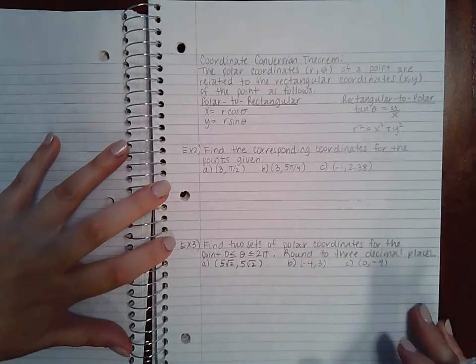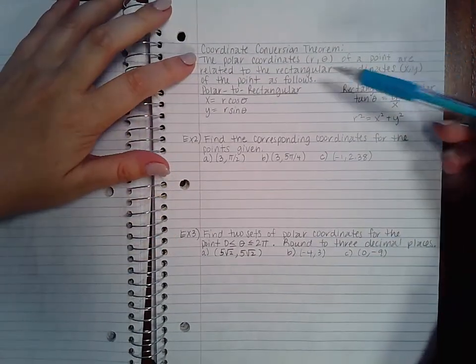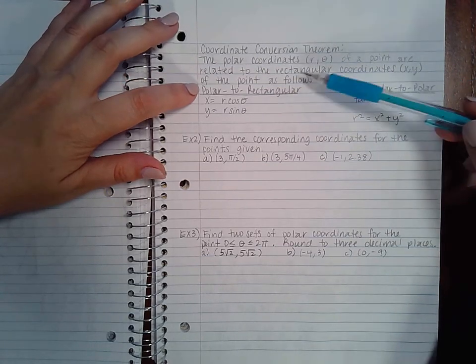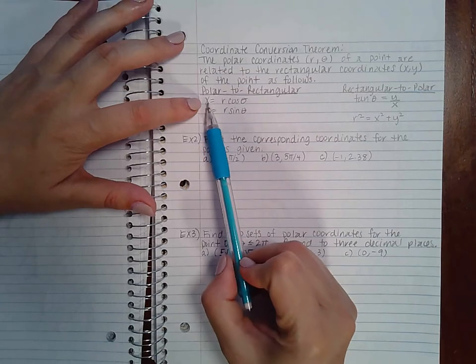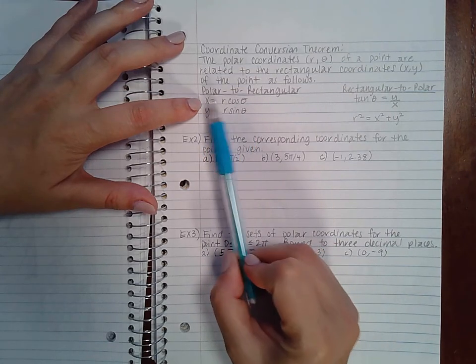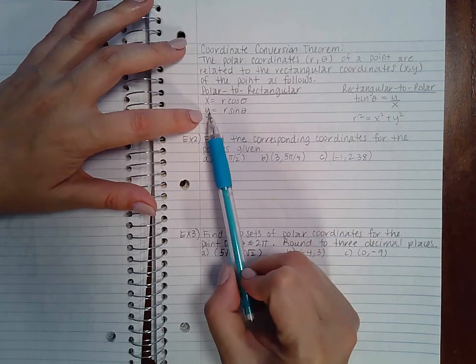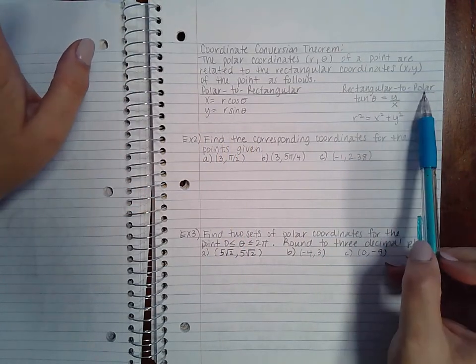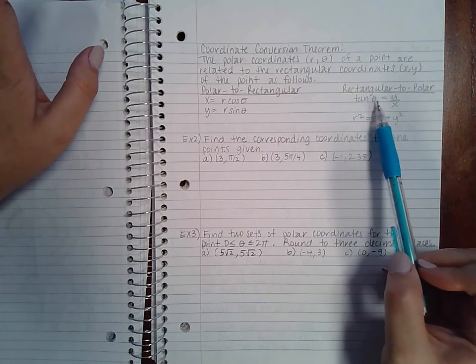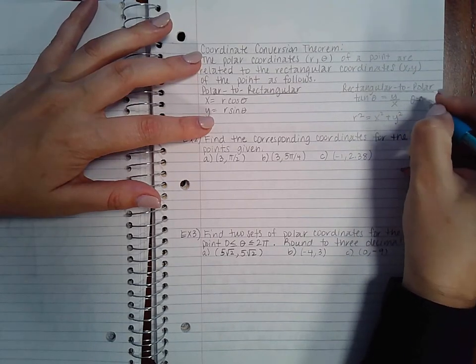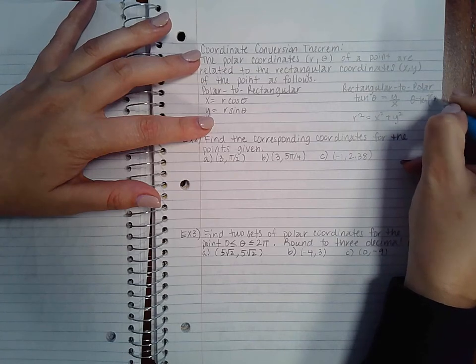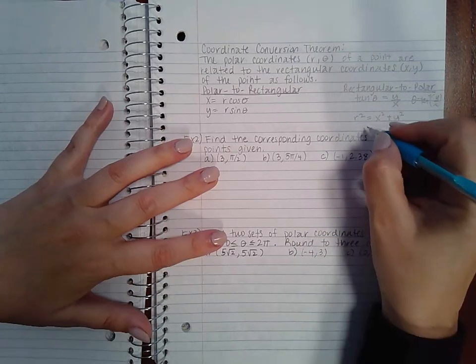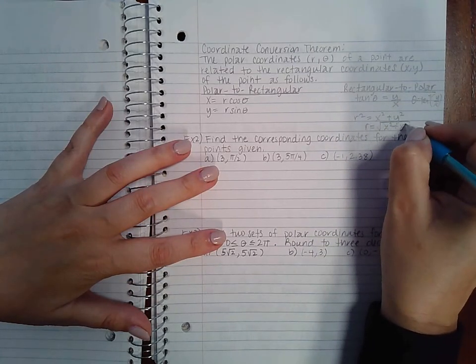So let's go ahead and continue. It says the Cartesian Conversion Theorem. So the polar coordinates (r, θ) of a point are related to the rectangular coordinates (x, y) of the point as follows. So x equals r cosine θ when you're going from polar to rectangular, and y equals r sine θ. Now, if you have the rectangular coordinates and you want polar coordinates, then you can find θ by doing tan inverse of y/x. And you can find r pretty much by doing the Pythagorean Theorem.